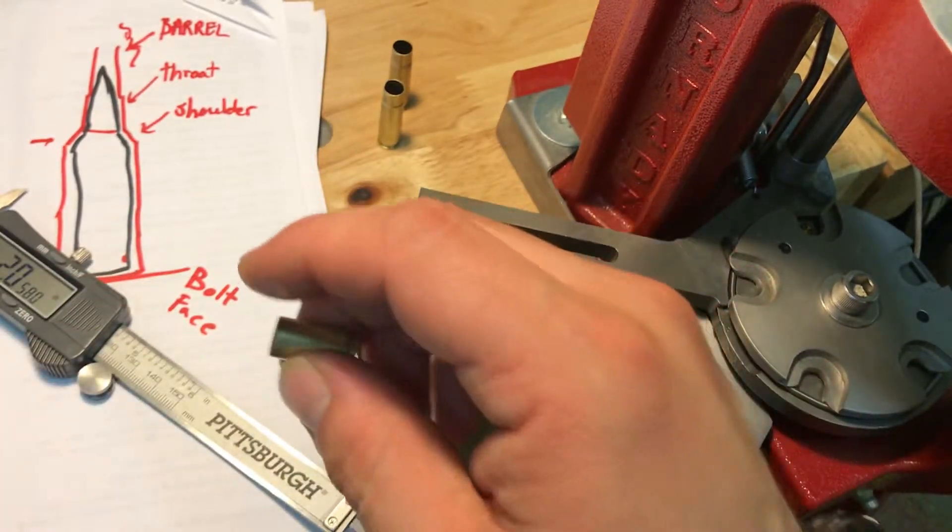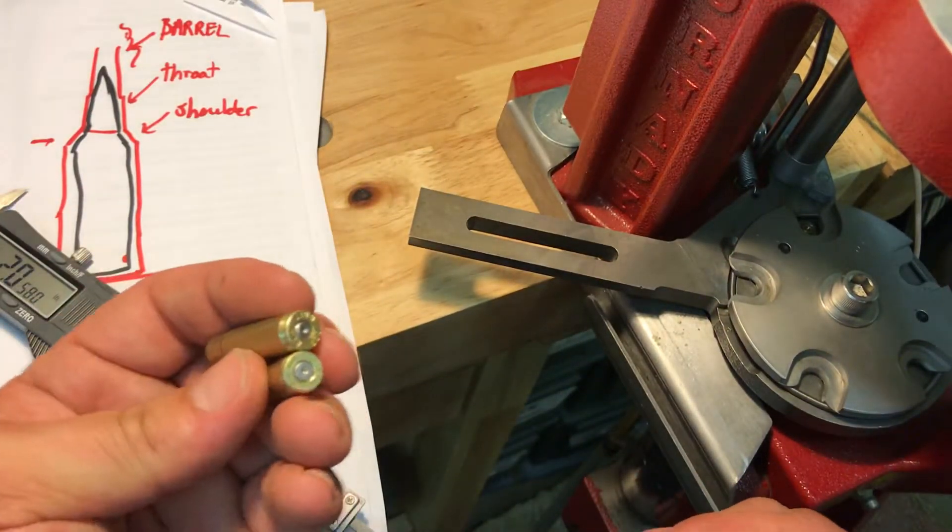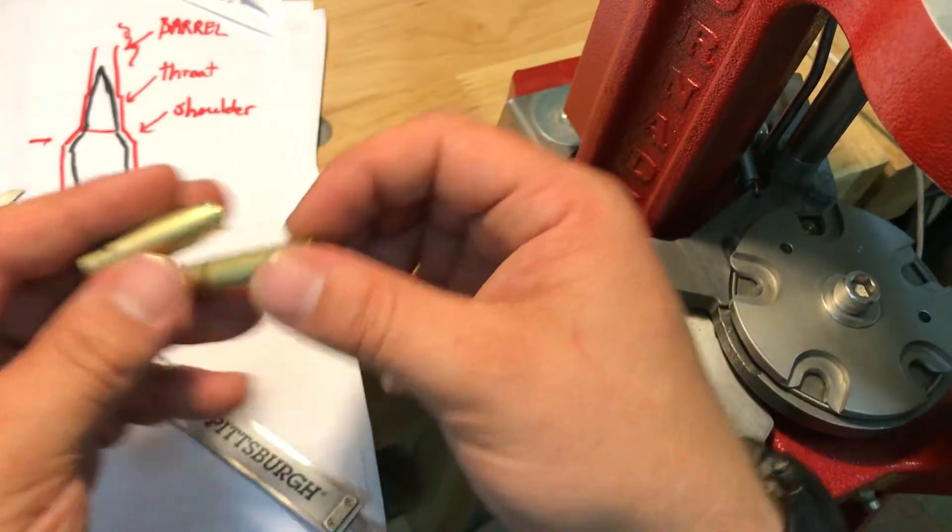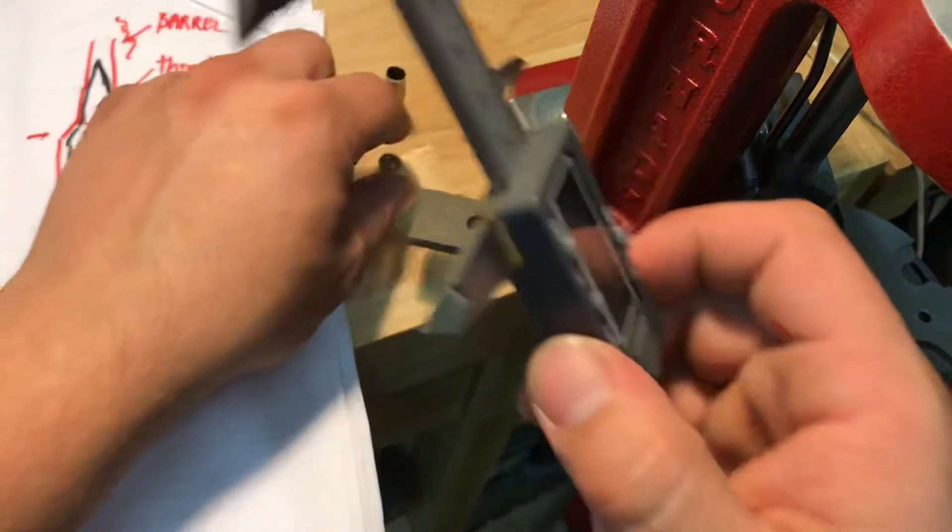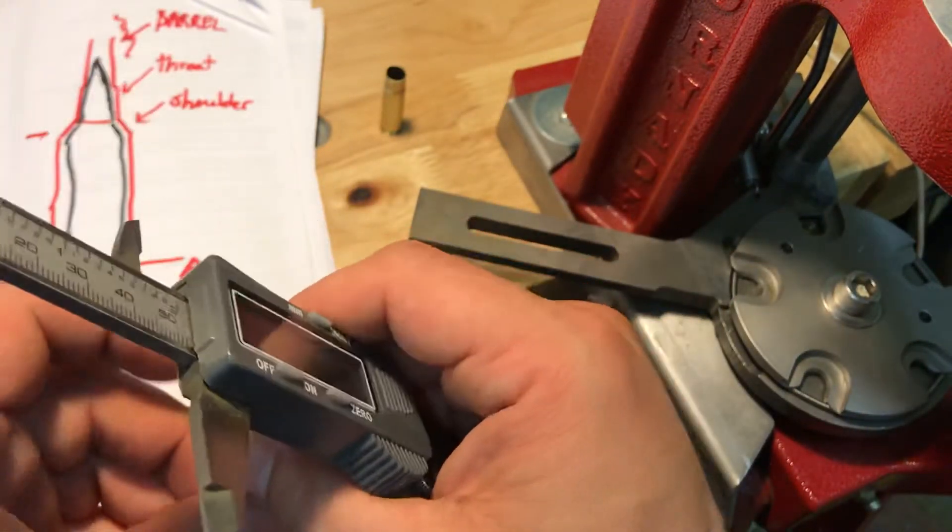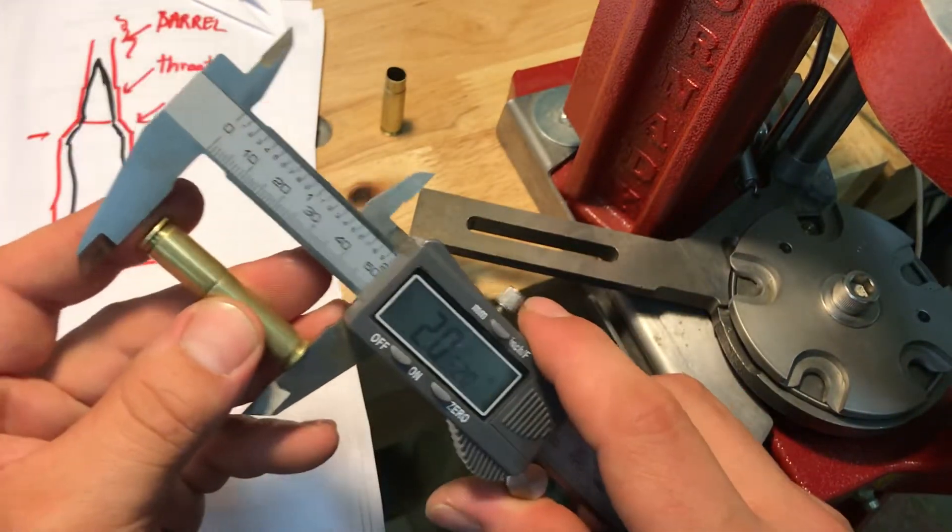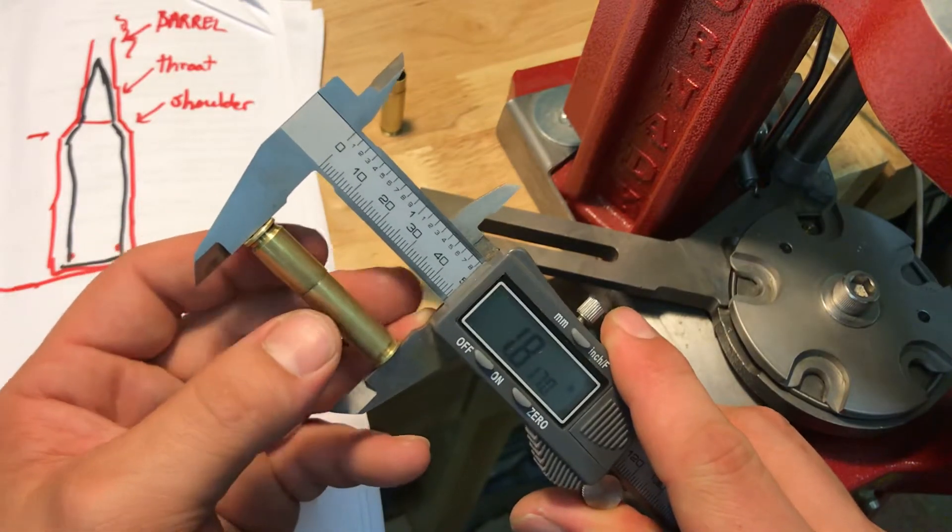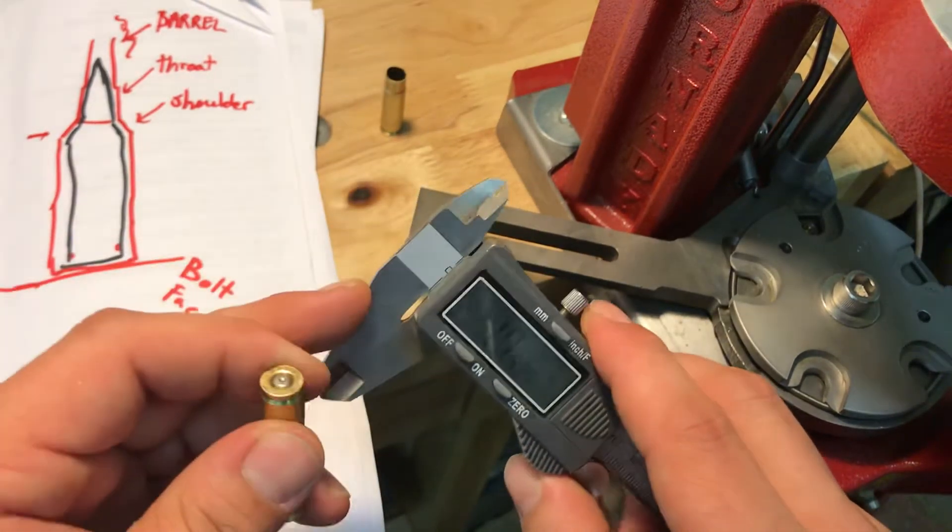So we'll take our fireform case. That's the ones I've already done. These are pre-lubed and we're going to measure it beforehand and measure it after. So we're going to shoot for that 20 thousandths that I talked about. Let's zero this.